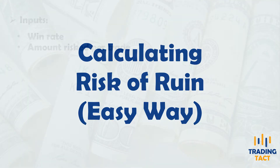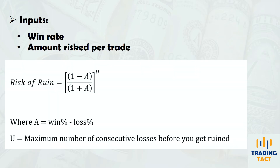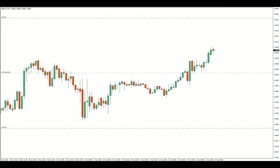With this method, you only need to know your win rate and the amount risked per trade. Risk of ruin can be calculated using this formula, where A is your winning percent minus your losing percent, and U is the maximum number of consecutive losses before you hit your ruin point.